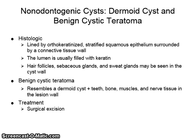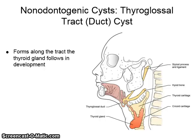The benign cystic teratoma resembles a dermoid cyst, but it can also have teeth, bone, muscle, and nerve tissue in the lesion wall. It is also treated with surgical excision.